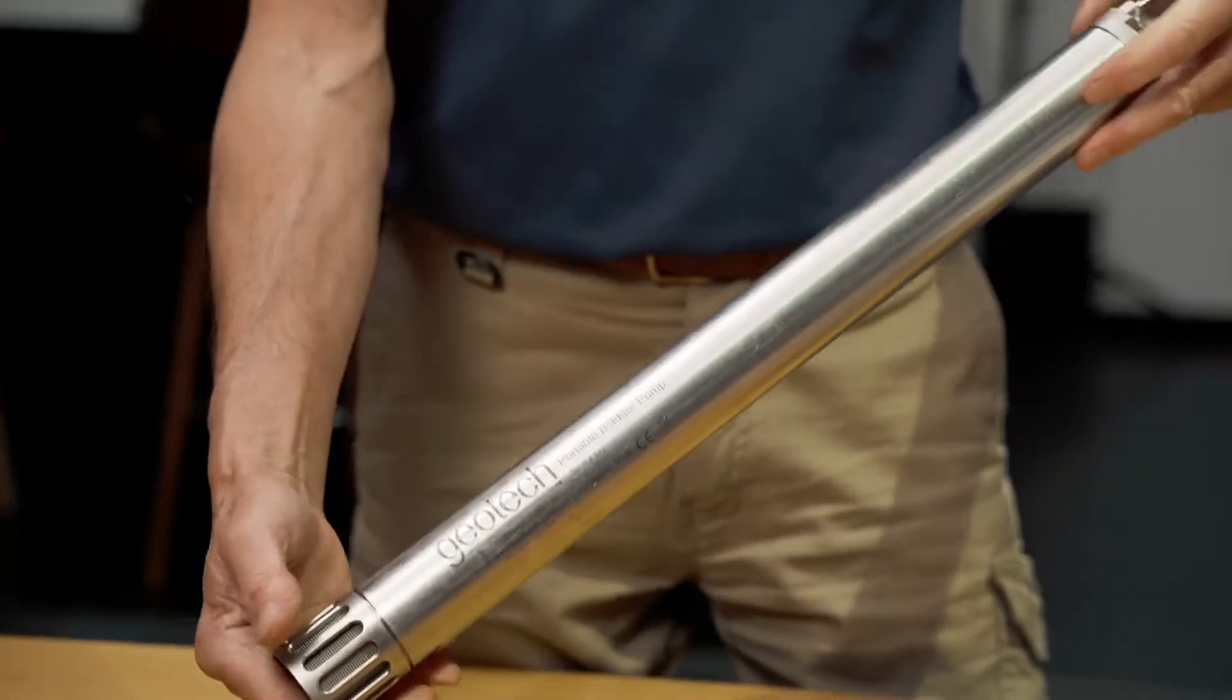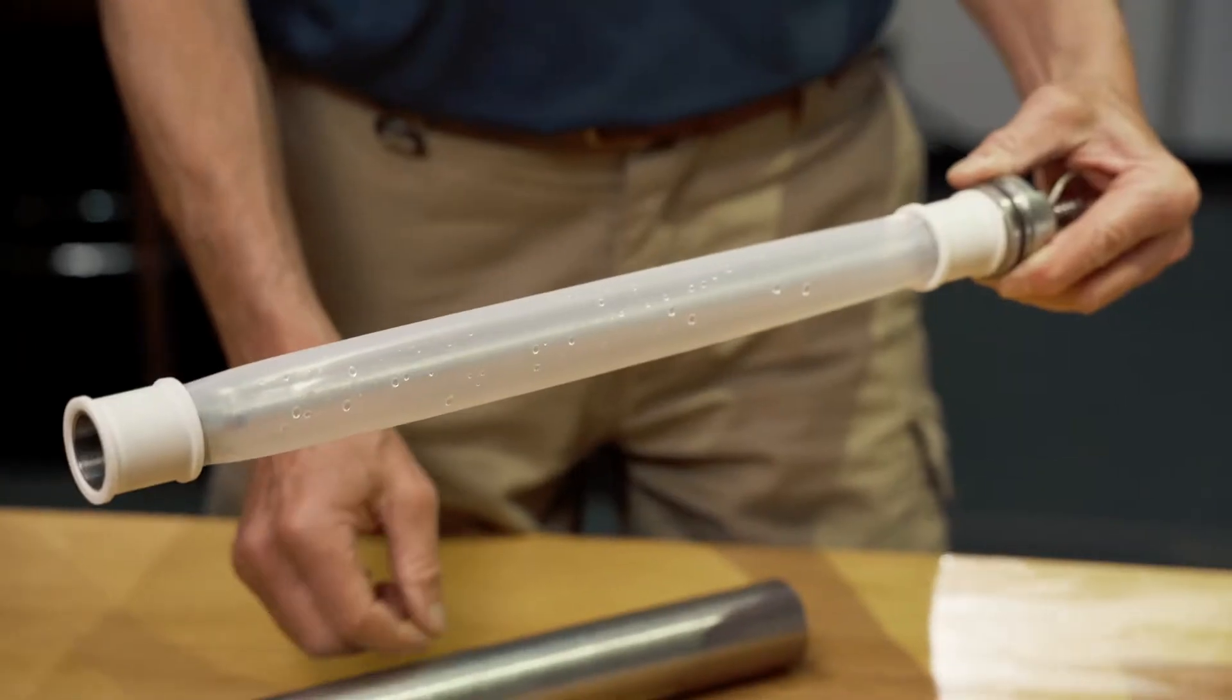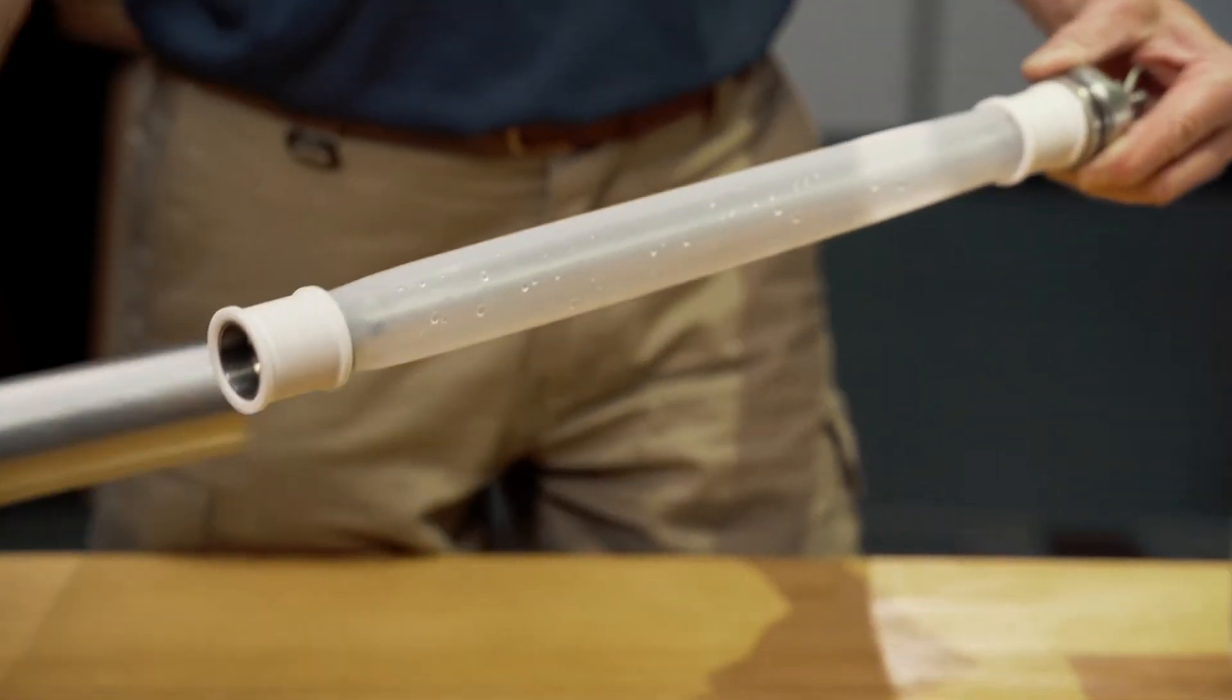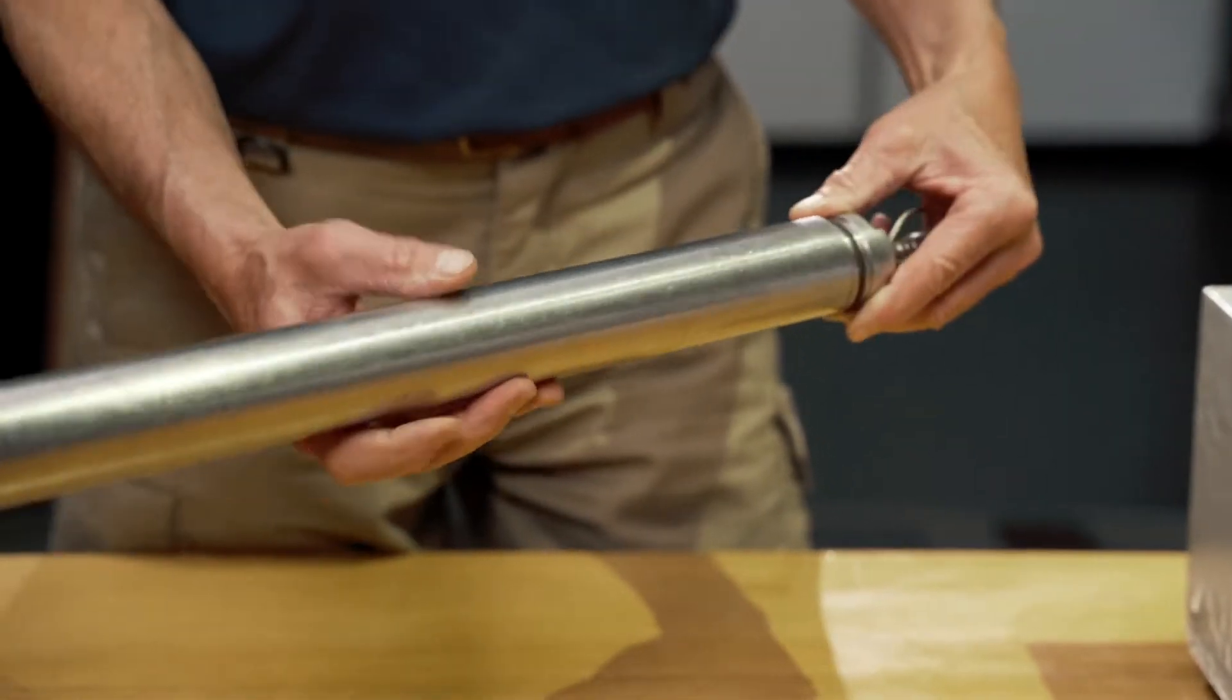Today we will be showing you how a Geotech bladder pump low flow kit is put together. First, attach the bladder into the pump. This is designed to be a tight fit.